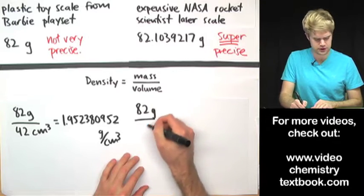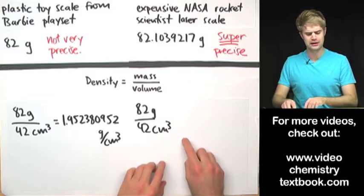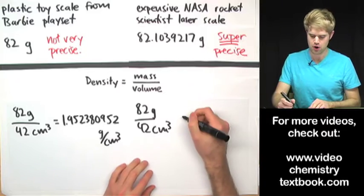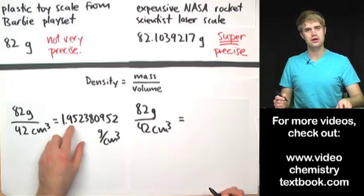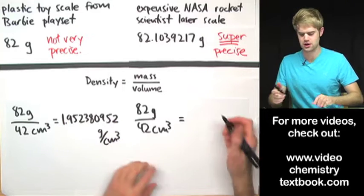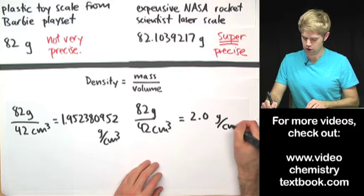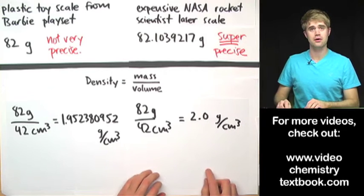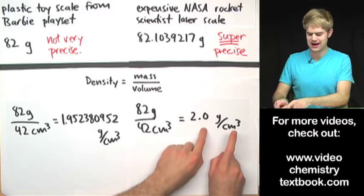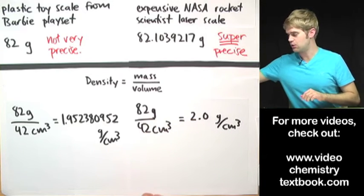If I'm using significant figures, I'll do the same calculations but I'll realize that there are two significant figures in both of the numbers that I'm starting with which means that my final answer here can't have more than two significant figures. So instead of one point all of this stuff, I'm only going to get 2.0 grams per cubic centimeter.